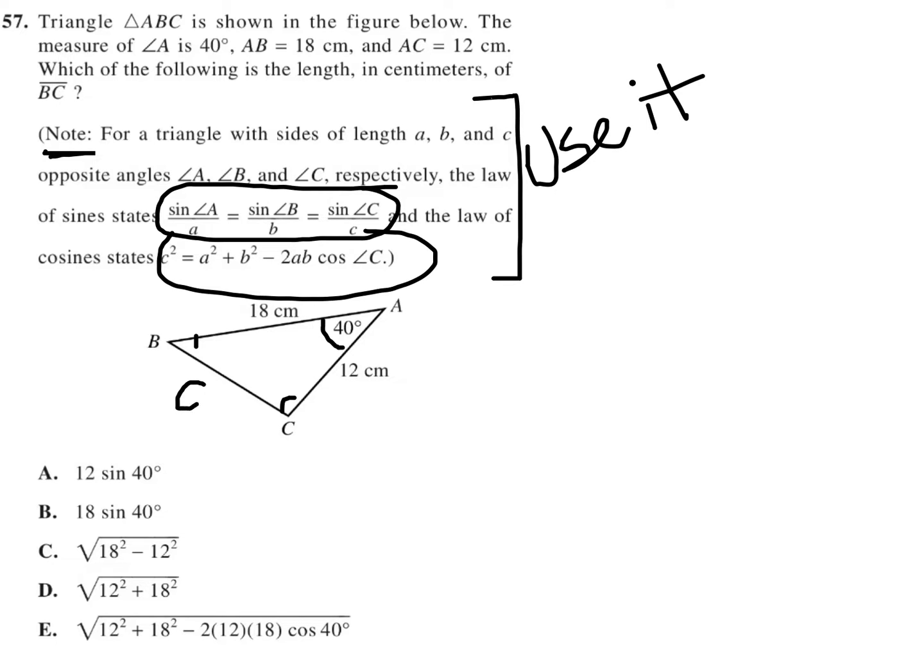So angle A would mean that this is side a, angle B would mean that this is side b, and angle C would mean that the opposite side is side c.